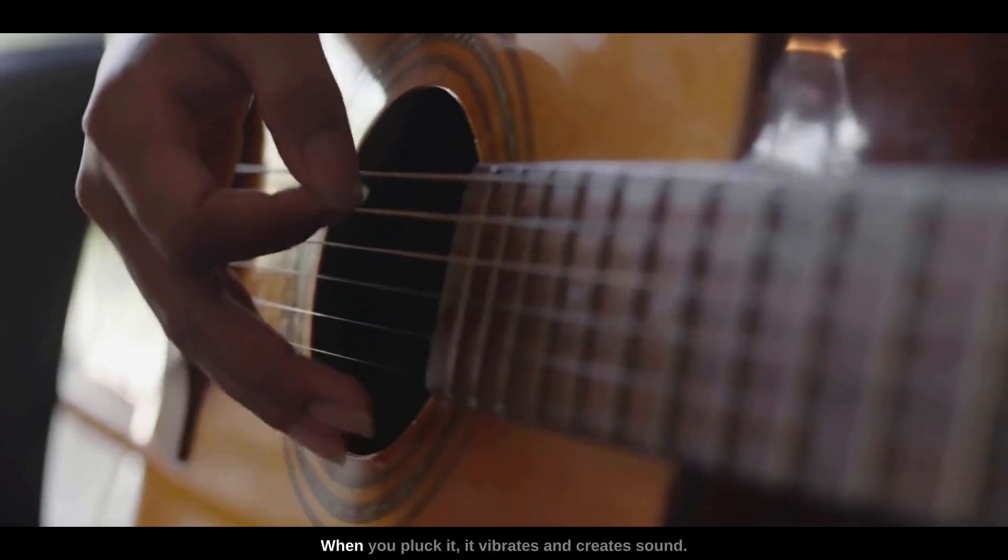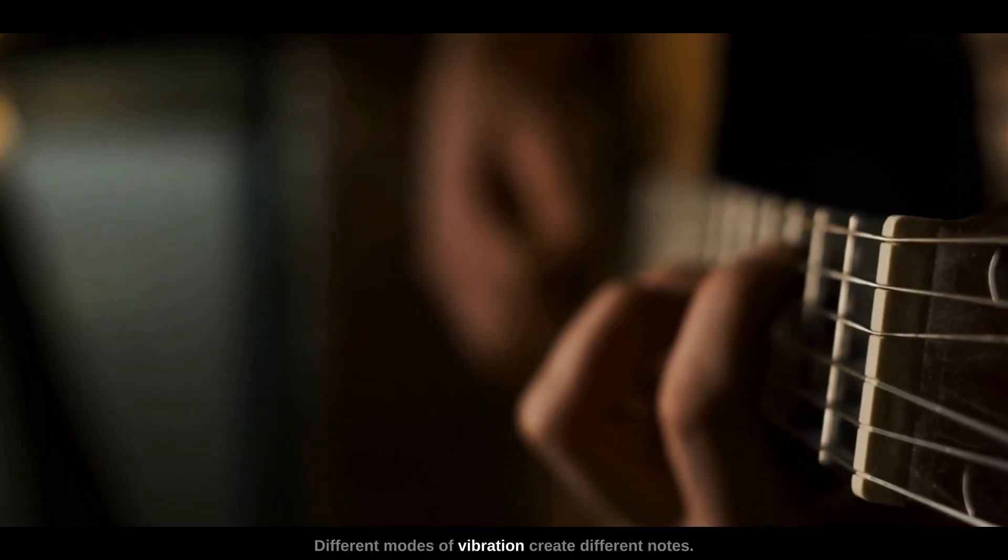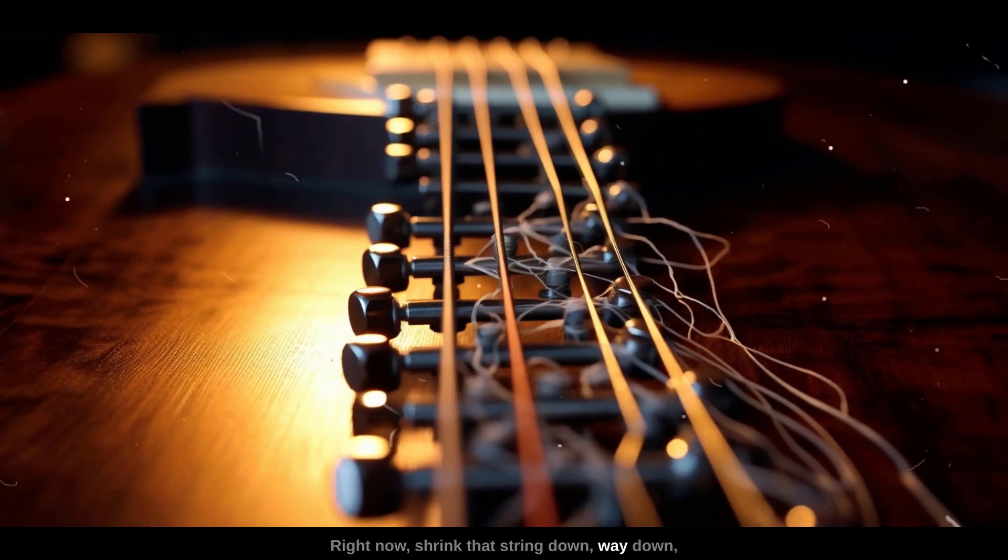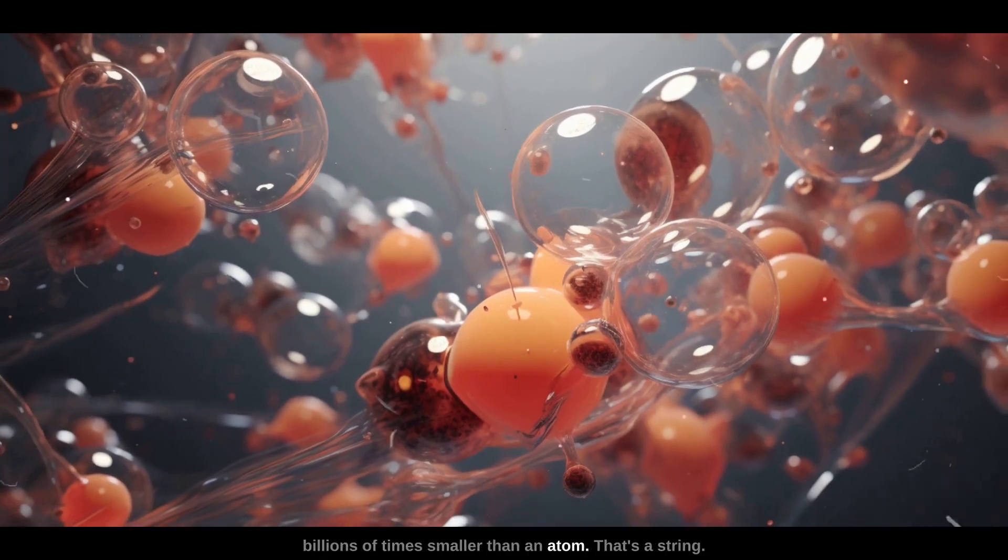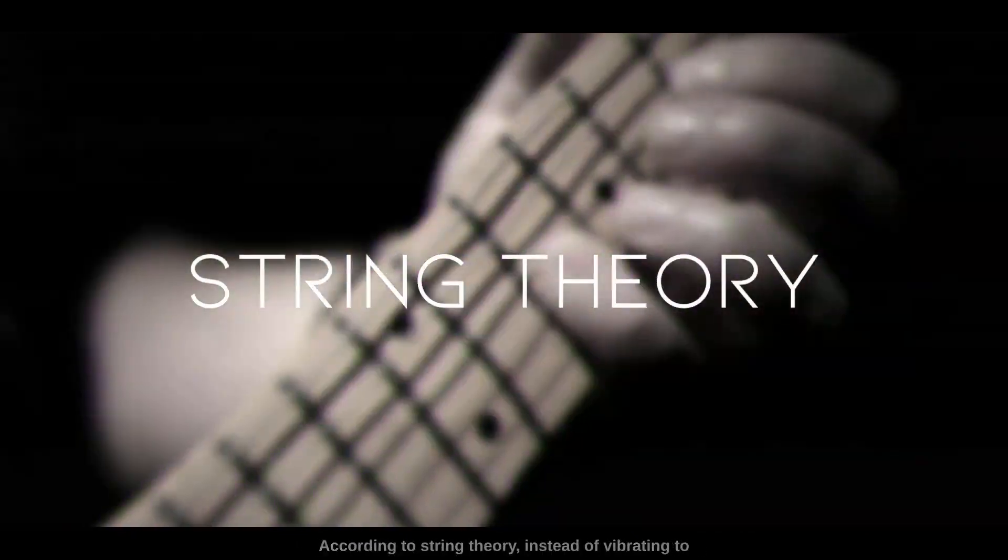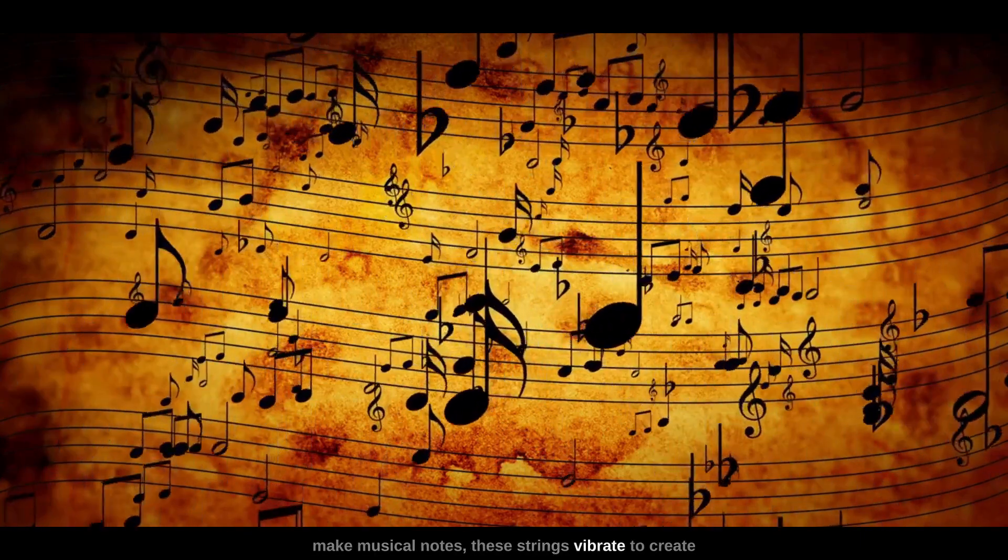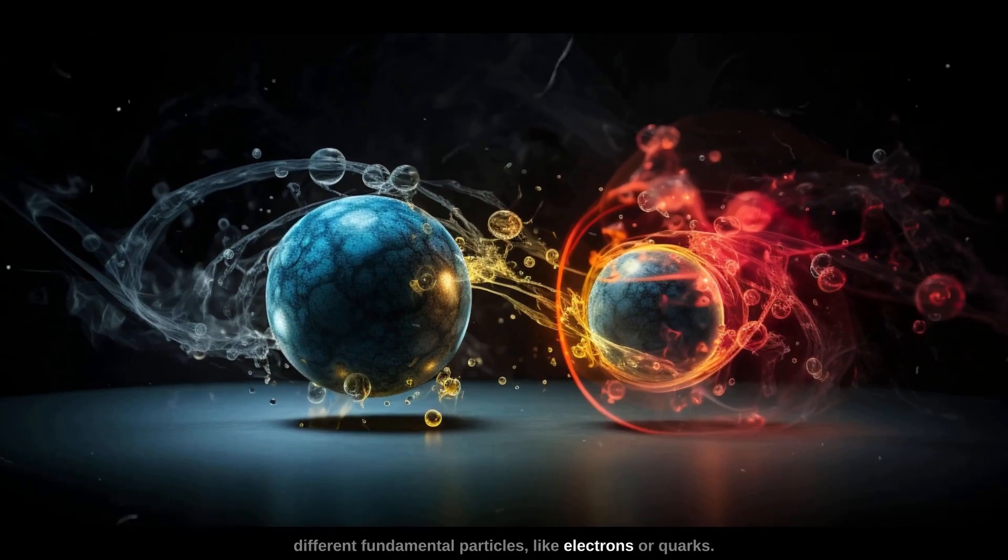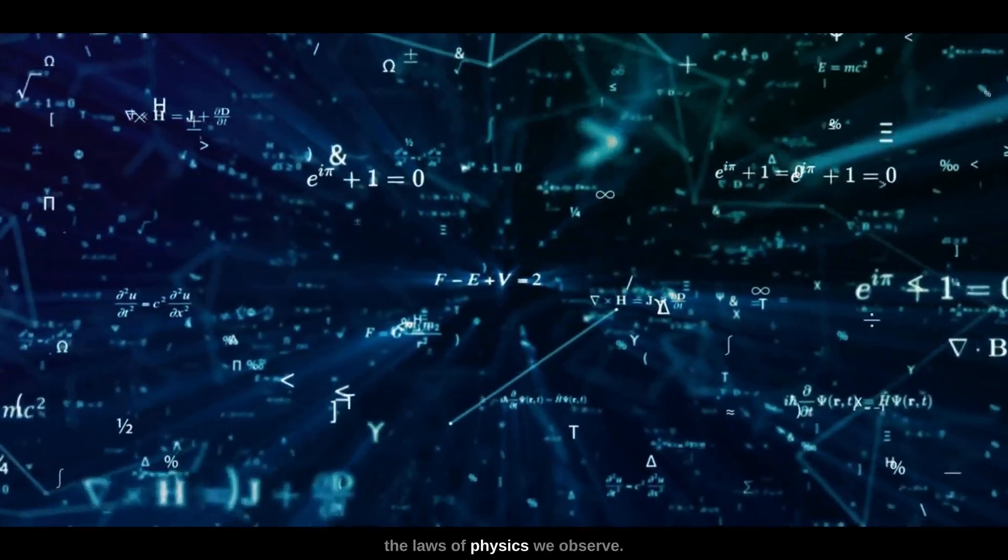Imagine a guitar string. When you pluck it, it vibrates and creates sound. Different modes of vibration create different notes. Right now, shrink that string down way down, all the way down to a level that's billions of times smaller than an atom. That's a string according to string theory. Instead of vibrating to make musical notes, these strings vibrate to create different fundamental particles like electrons or quarks. The notes these strings play are the laws of physics we observe.